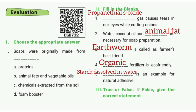Fourth one: A certain fertilizer is eco-friendly. The answer is organic. Fifth one: A certain substance is an example of a natural adhesive. The answer is starch, which dissolves in water.